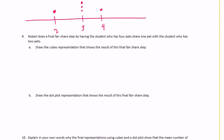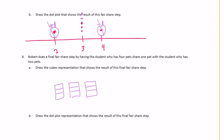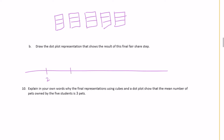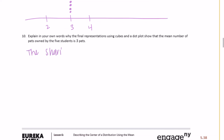Question 9: Robert does a final fair share step — the student with 4 pets shares one with the student who has 2 pets. Take one away from 4 to make 3, and add one to 2 to make 3. Now we're left with five threes. The fair share dot plot shows five dots all at 3. The mean — the fair share value — is 3 pets per person.